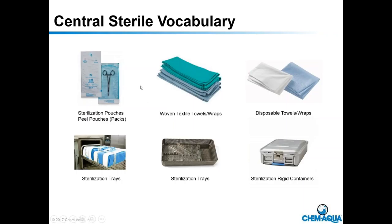Vocabulary: sterilization pouches can also be called pill pouches or pill packs. A single instrument goes inside a semi-permeable membrane pouch — steam can penetrate to sterilize but the pack stays sterile once processed. Woven textile towels or wraps are made of cotton and are washed each time they're used. Disposable towels and wraps are used once and thrown away. Here is heat-sensitive tape — we know this tray just came out of the sterilizer.